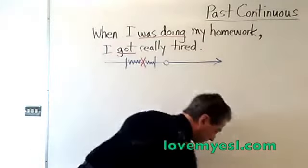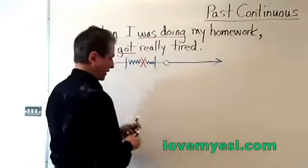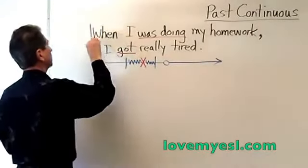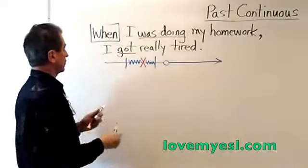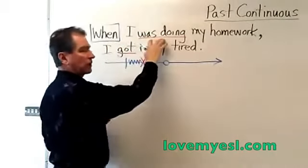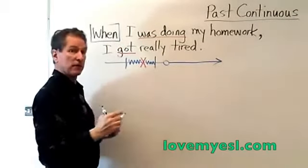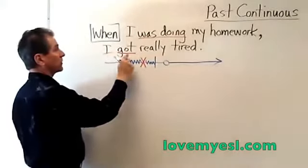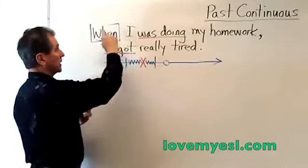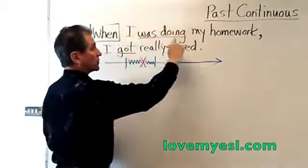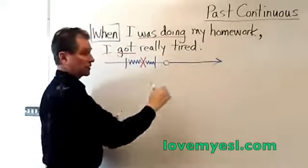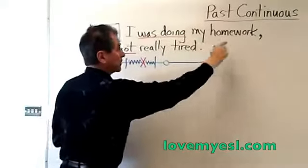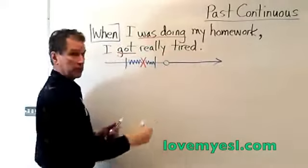There are three words that you use at the beginning here. 'When' is one of these words. 'When' can go in front of the past continuous, but the interesting thing about 'when' is that it can also go before the simple past. You can say, 'When I was doing my homework, I got really tired,' but you can also say, 'I was doing my homework when I got really tired.' You can put 'when' in front of the simple past.